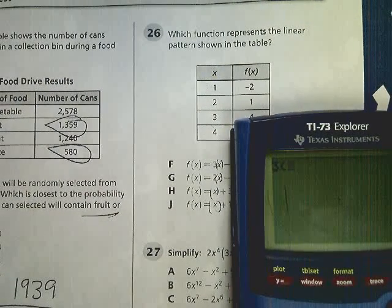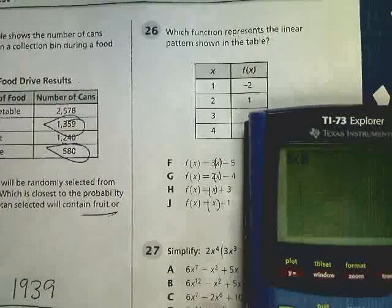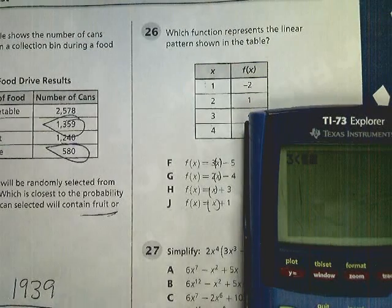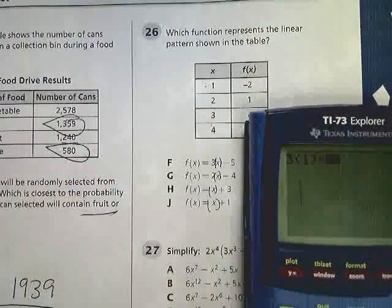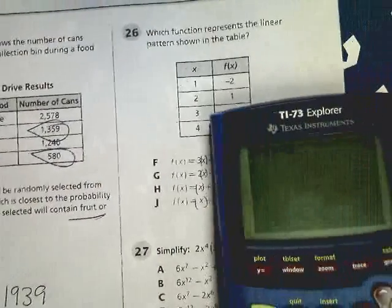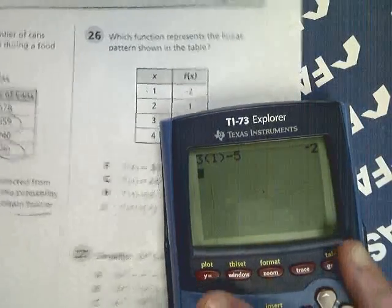I'm going to do 3x minus 5, so I do 3 times (1) - the x value I'm going to try to push in - and I get -2, which is exactly what I wanted to get in the first place.